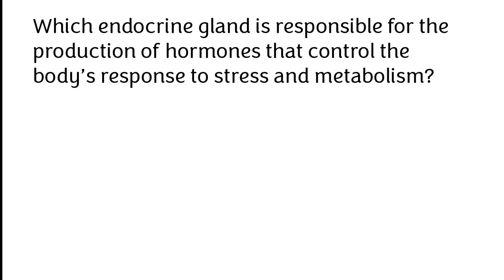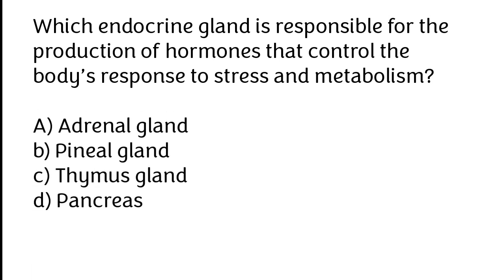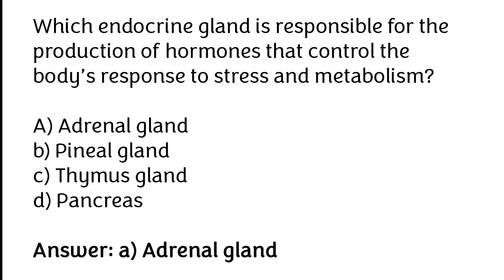Which endocrine gland is responsible for the production of hormones that control the body's response to stress and metabolism? Adrenal gland, Pineal gland, Thymus gland, Pancreas. The correct answer is Option A — the Adrenal gland is responsible for the production of hormones that control the body's response to stress and metabolism.